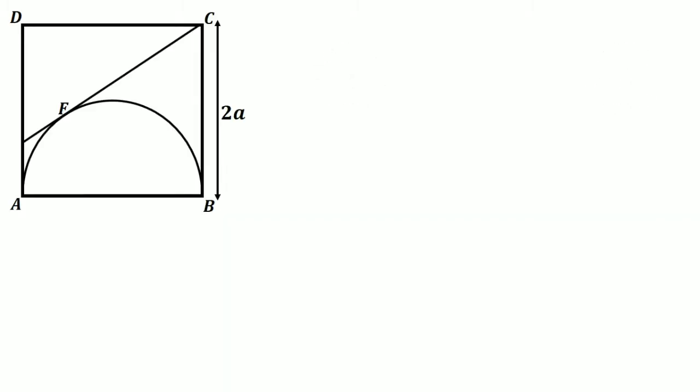Here is our final figure after removing some lines to make it easier to understand. Let the center of the semicircle be O, then draw the radius of the semicircle to the tangential point F. We know that it is perpendicular to the tangential line FC.